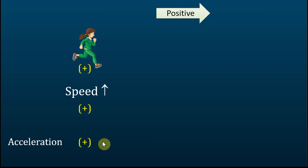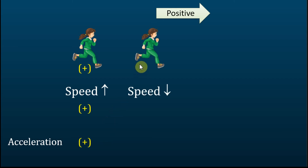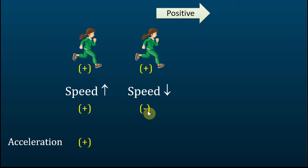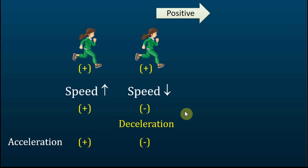Let's see another case. The same girl is running to the right — moving in the positive direction. However, this time she is moving with a decreasing speed. Therefore, the rate of speed change is negative. Speed decrease means she is undergoing deceleration. In this case, we say the acceleration is negative. So far, everything seems right: positive acceleration means speeding up, and negative acceleration means slowing down or deceleration.